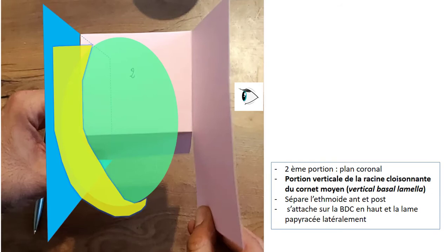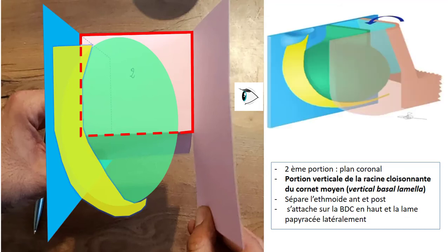The second portion of the middle turbinate runs on a coronal plane. It represents the posterior boundary of the anterior ethmoidal complex and separates it from the posterior ethmoid. So when you go through it from front to back, you find yourself on the posterior ethmoid. It attaches to the skull base on the top and to the lamina papyracea laterally. The second portion is also called the vertical basal lamella, which is a very important landmark in ethmoidal surgery.